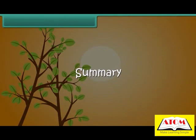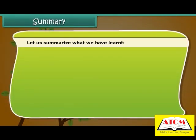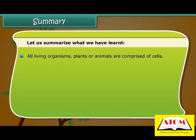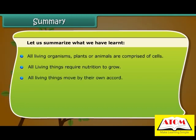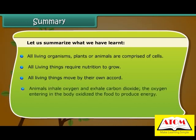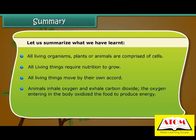Let us summarize what we have learned. All living organisms, plants or animals, are comprised of cells. All living things require nutrition to grow. All living things move by their own accord. Animals inhale oxygen and exhale carbon dioxide, and the oxygen entering the body oxidizes food to produce energy. All living things have a limited lifespan.